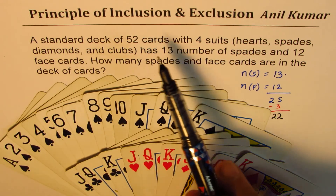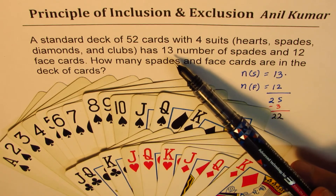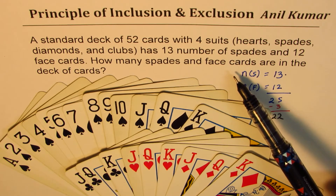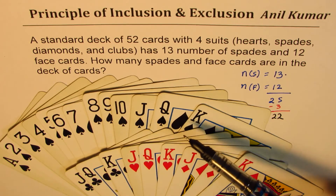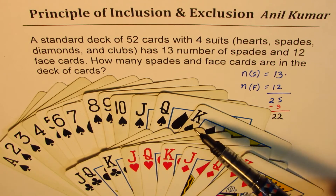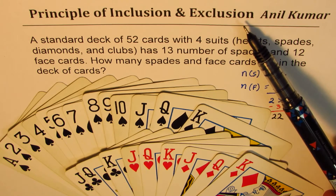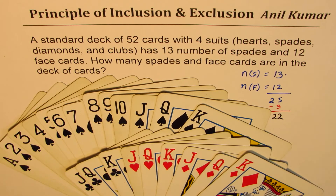So that gives you the principle of inclusion and exclusion. You can visualize it — it's a very good example. We add the number of spade cards with the number of face cards and we take away those which are common to both. The face cards of spades — Jack, Queen and King — are common to both, so they should be subtracted or excluded to give us the actual count, which is 22.